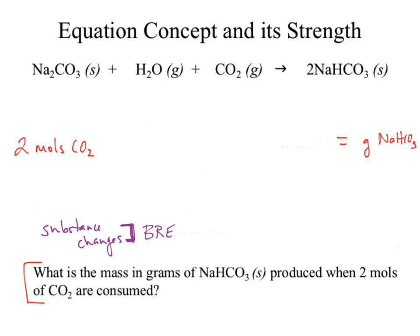So we have to look for our balanced reaction equation to determine if the substance changes. What else did we notice changes? The unit changed — we went from moles to grams. Where do we find a mole-to-gram conversion? That's off the periodic table. So by looking at just what changed, it's now: where do we find that information, and how do we then manipulate it?